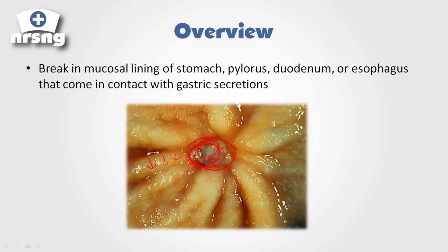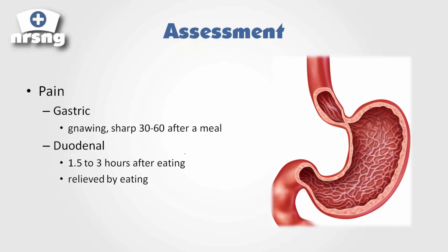The number one thing we're going to see in our patients is pain. As that gastric acid is secreted into the stomach and touches the actual tissue, it's going to burn and hurt greatly. If a patient has a gastric ulcer, we're going to see sharp pain 30 to 60 minutes after a meal — that makes sense because that's about when we start digesting food. If it's a duodenal ulcer, it's going to be one and a half to three hours after eating.